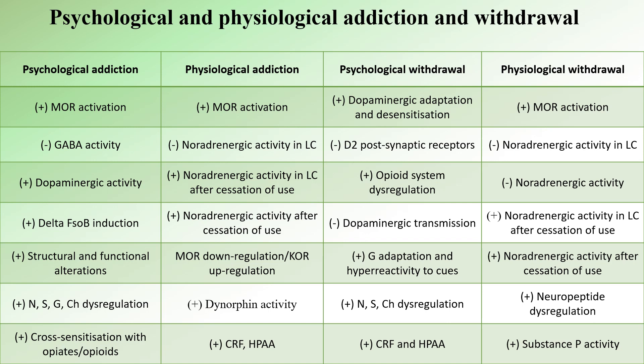Furthermore, various other brain pathways including noradrenergic, serotonergic, glutamatergic, and cholinergic may also become dysregulated, potentially contributing to further alterations in the brain's functioning. Animal models have shown cross-sensitization between Kratom and other opiates and opioids, suggesting a shared neurobiological pathway in the development of psychological addiction.